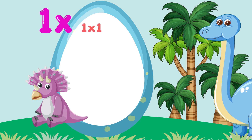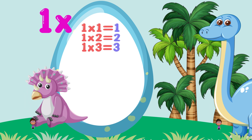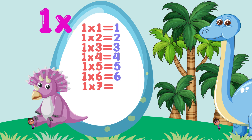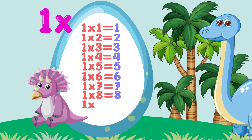1 times 10 is equal to 10. 1 times 7 is equal to 7. 1 times 8 is equal to 8. 1 x 4 is equal to 4. 1 x 5 is equal to 5. 1 x 6 is equal to 6. 1 x 7 is equal to 7. 1 x 8 is equal to 8. 1 x 9 is equal to 9. 1 x 10 is equal to 10.